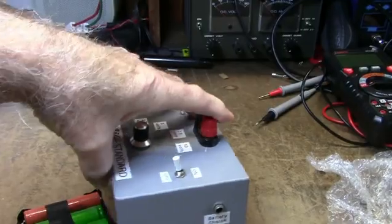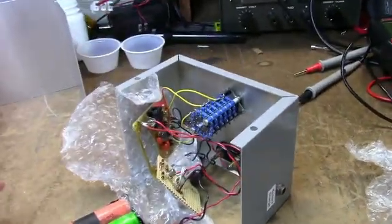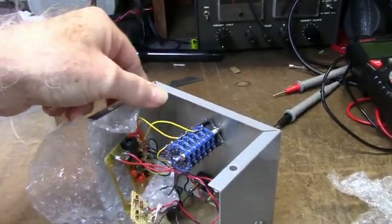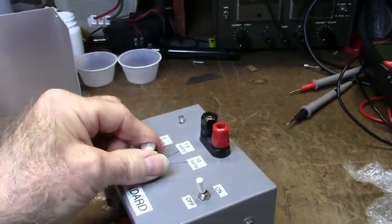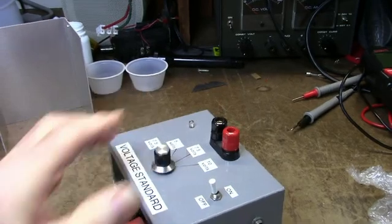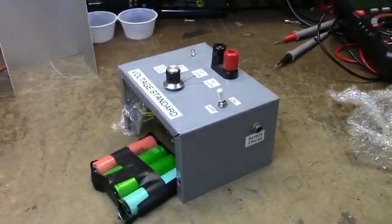And of course there's two banana jacks on the top here with binding posts on them that I can connect an external device. You select the range you want with this wafer switch here, and you can pick either 10, 7.5, 5, or 2.5 voltages. So next I will show the circuit I used to monitor the cell voltage.